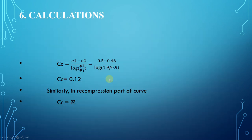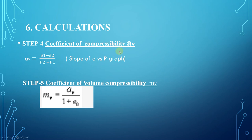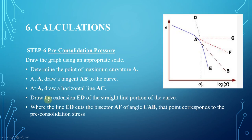The coefficient of compressibility aᵥ is the slope of the e versus p (not log p) graph, determined using the same procedure as for Cc. The coefficient of volume compressibility mᵥ is the volumetric strain per unit increase in stress, given by mᵥ = aᵥ / (1 + e₀). With e₀ already determined, mᵥ can be calculated.